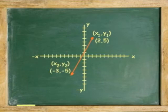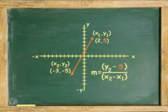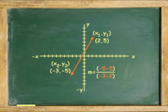For example, the line beginning or passing through point (2,5) and ending or passing through point (-3,-5) has a slope of -5 minus 5 over -3 minus 2. Solving the equation, -5 minus 5 is -10 and -3 minus 2 is -5. Divide.